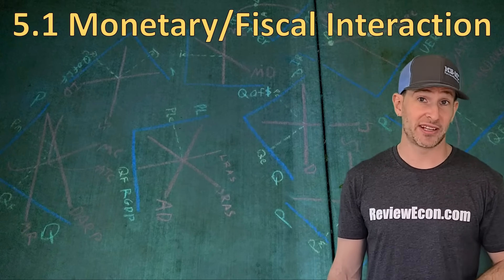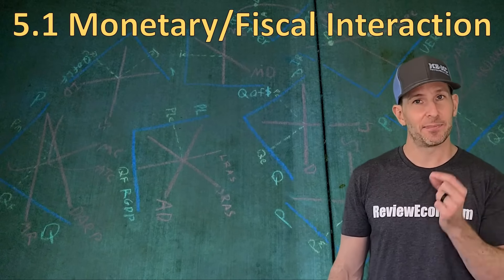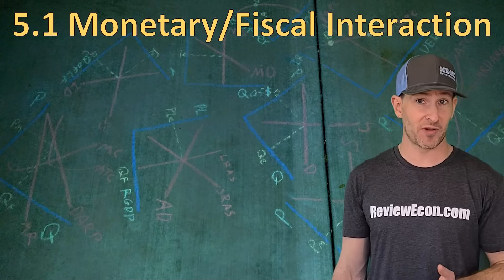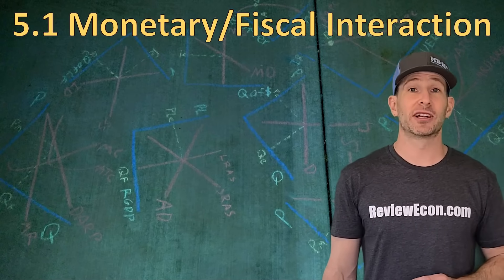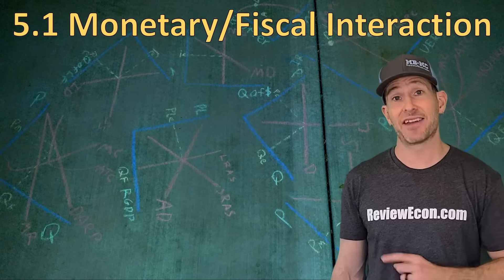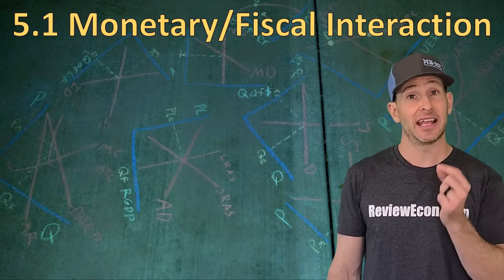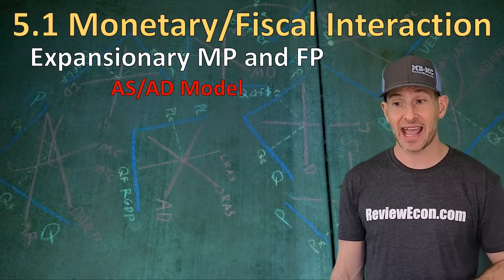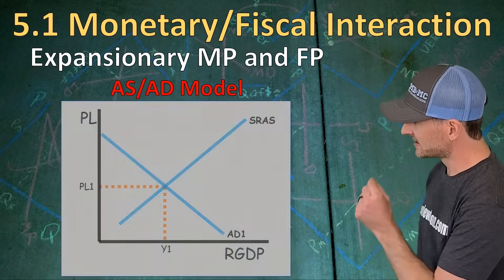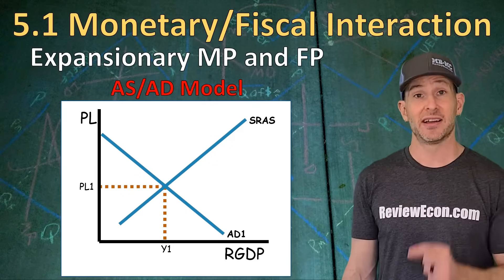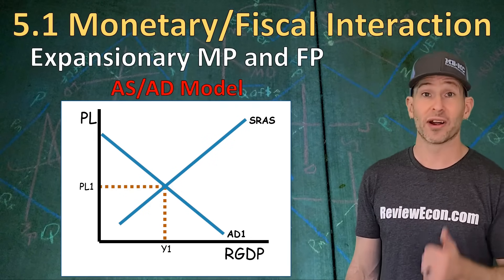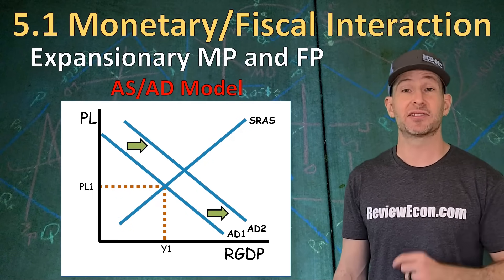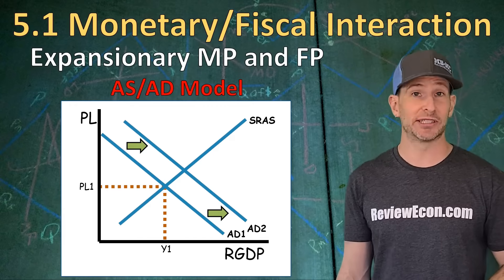Now most of Unit 5 takes old things you've already learned in previous units and applies it in new ways. So it can be a little bit tricky, but if you really understood it the first time around, it's not too bad. The first thing we're going to look at is the interaction between monetary policy and fiscal policy actions. Since expansionary fiscal policy will increase government spending or increase consumption, that will shift the aggregate demand curve to the right, causing the price level to increase and real output to increase.